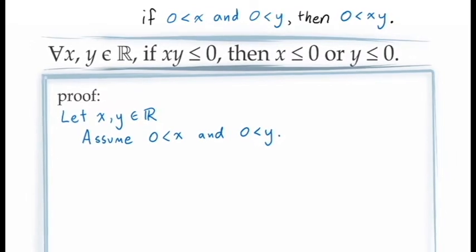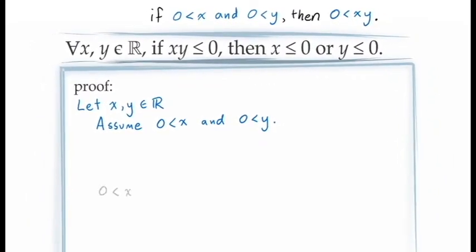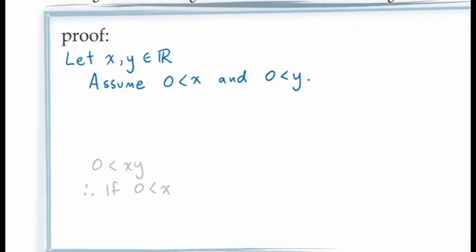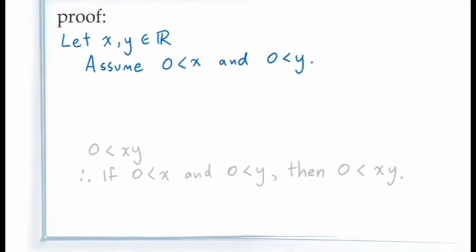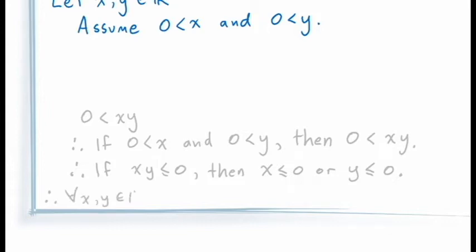From here, we're required to demonstrate that the antecedent is false — in other words, we need to demonstrate that XY is greater than 0. If we're able to do this, then the principle of conditional proof will allow us to conclude: if X is greater than 0 and Y is greater than 0, then XY is greater than 0, which is equivalent to its contrapositive form: if XY is less than or equal to 0, then either X is less than or equal to 0 or Y is less than or equal to 0. If we can do this for the arbitrary constants X and Y, then the principle of universal generalization will allow us to conclude that this is true for all values of X and Y in the real numbers.